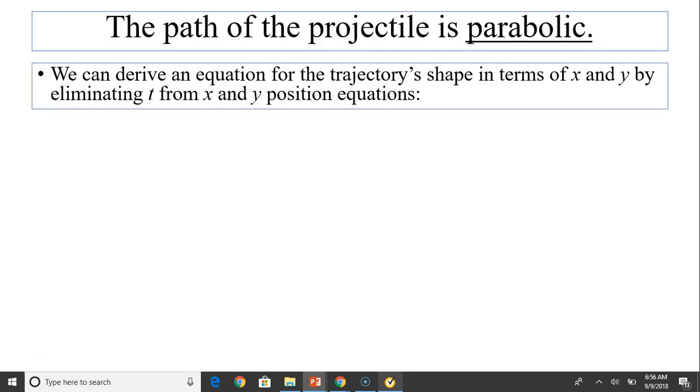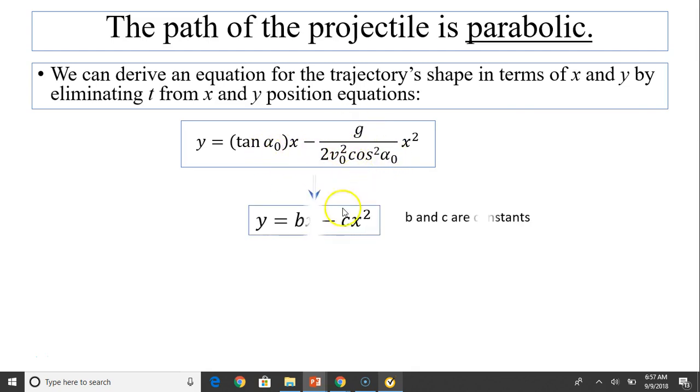The path of a projectile is parabolic. We can derive an equation for the trajectory's shape in terms of x. Substitute t into the y equation: y equals tangent α0 times x minus g over 2 v0 squared cosine squared α0 times x squared. Since α0 is constant and v0 is constant, this is constant, the second term is also constant.